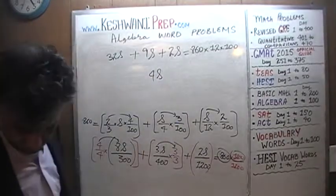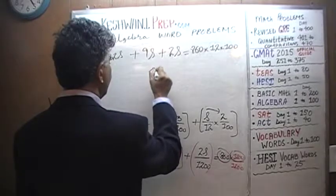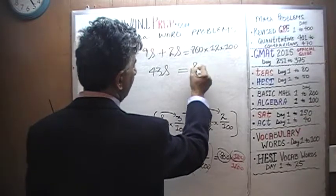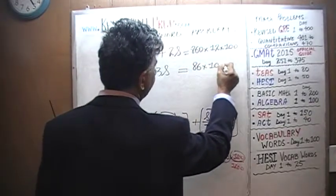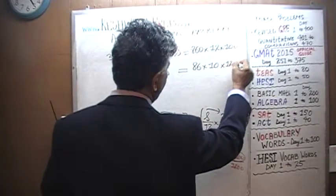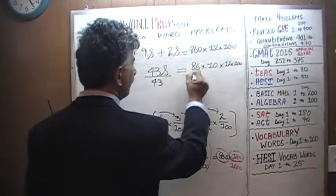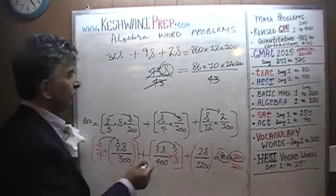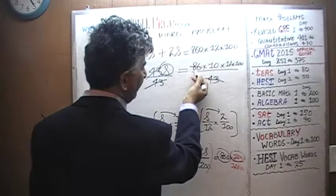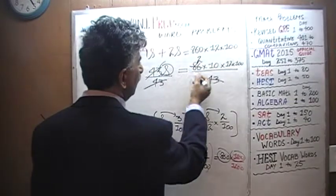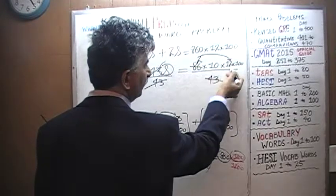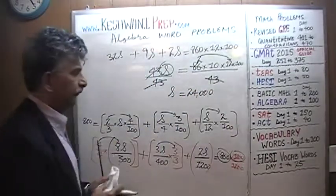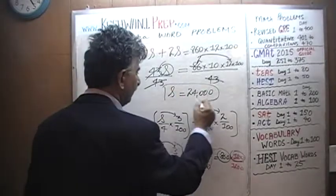43S equals 860 times 1200. Writing 1200 as 12 times 100 makes it easier to work with separately. Dividing both sides by 43: 86 is twice 43, so that gives 2. Then 2 times 12 is 24, times 100 is 2400 — wait, 2 times 12 times 100 equals 2400 times 10 equals 24,000. So S equals $24,000. His total savings is $24,000.